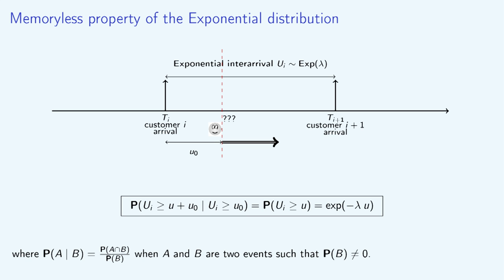The memoryless property of the exponential distribution can be stated mathematically. Before we do so, let's remember that if A and B are two events, then the probability of A given B is defined as the ratio of the probability of A and B, or A intersect B, to the probability of B.